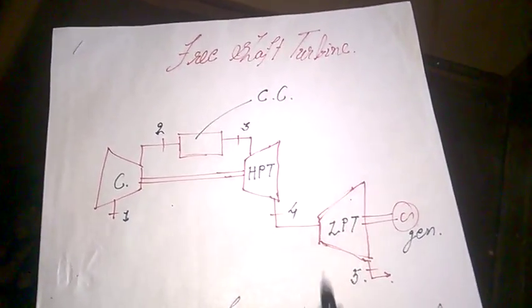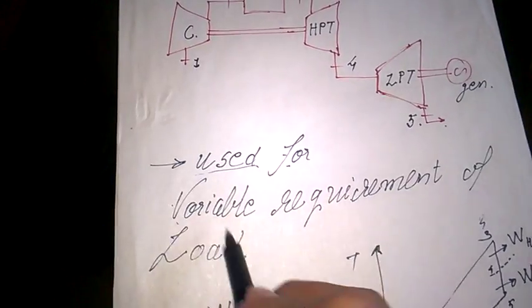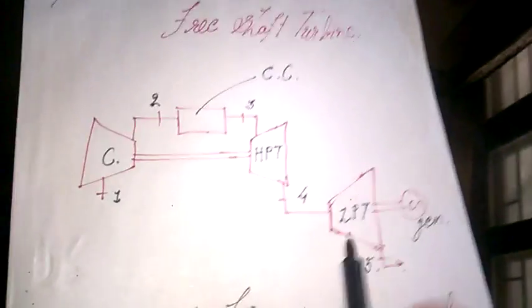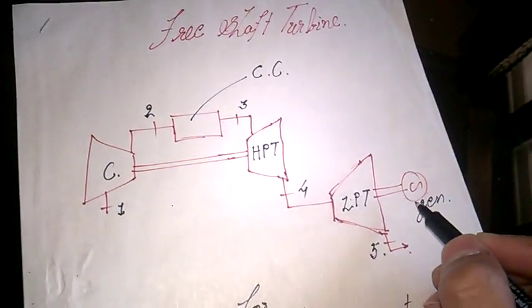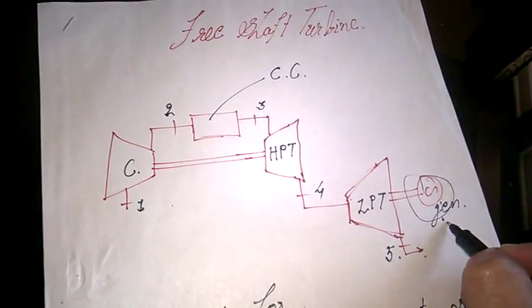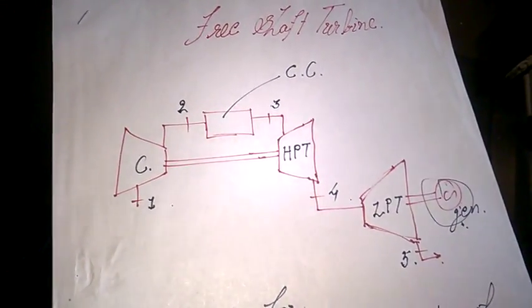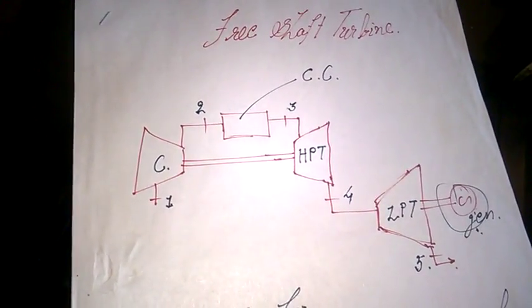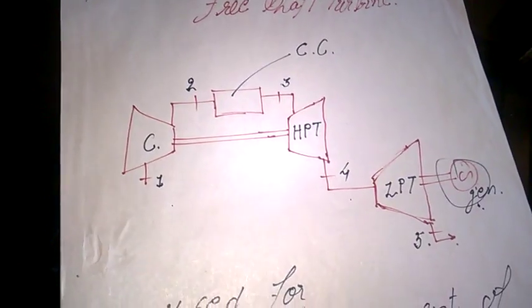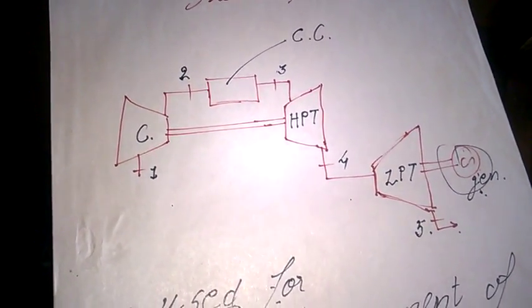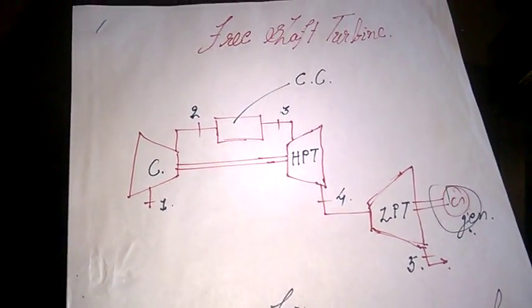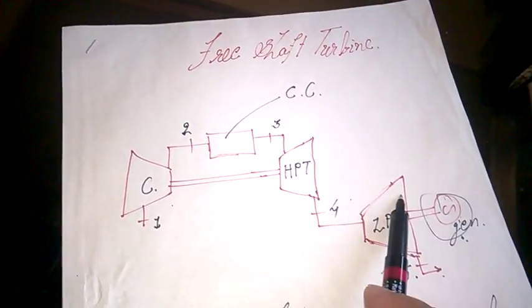Today we'll see what is a free shaft turbine. The free shaft turbine is used for the variable requirement of the load, or variable requirement of the power. Your requirement of power is obviously varying, so in a generator you generate whatever you require — you can't put extra energy into the system. So the variable requirement varies as per the load. Maybe this is used for industrial purposes where one plant is running and another is not, so that's the variable requirement of power. In that case we use the free shaft turbine.